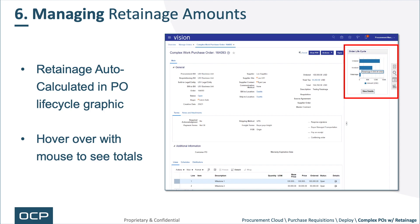Going back to the PO, one obvious question is: where am I at with retainage — how much have I retained? You can go back to your PO order lifecycle in the upper right. You can see the retainage amount — $9,500 in this example — because the cursor is on that retainage line at the bottom. It gives you the ability to see those details right in that graphic, and if you hover over or click into it, you can see further details.